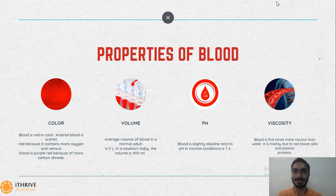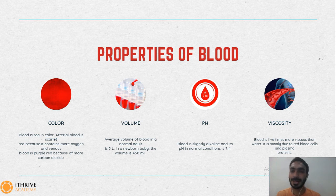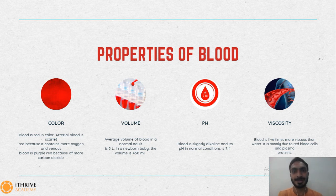Now talking about the properties of blood. Our blood is red in appearance. The blood flowing through arteries is scarlet red in appearance because of the higher concentration of oxygen in it. Whereas the blood flowing through the veins is purple red in appearance because of carbon dioxide in it. In normal adults, the volume of blood in the body is 5 liters. In newborn babies it is 450 ml.